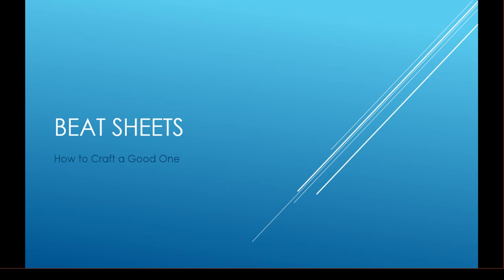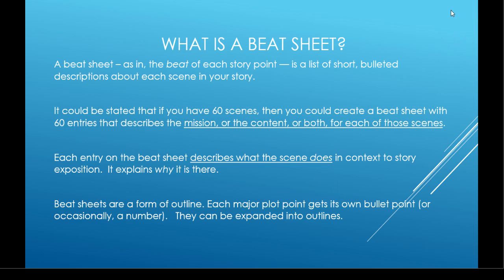First, let me tell you what a beat sheet is. You know what beats are for stories — sometimes it can be considered the breath between the story points. A beat sheet, as in the beat of each story point, is a list of short bulleted descriptions about each of your scenes and the scenes in your story. You can just do it as a bullet point to start out with.